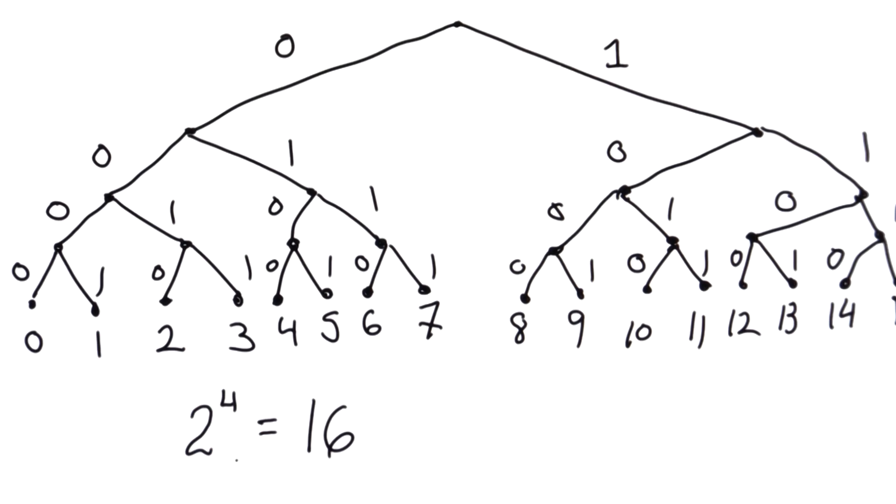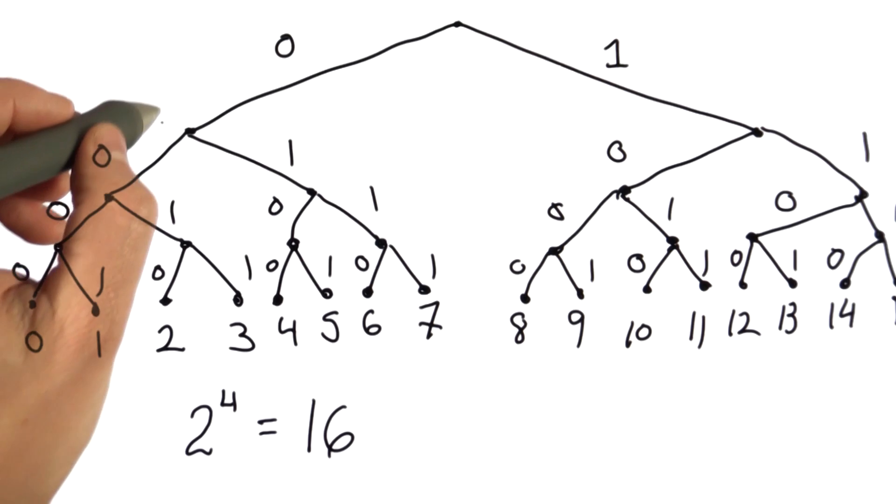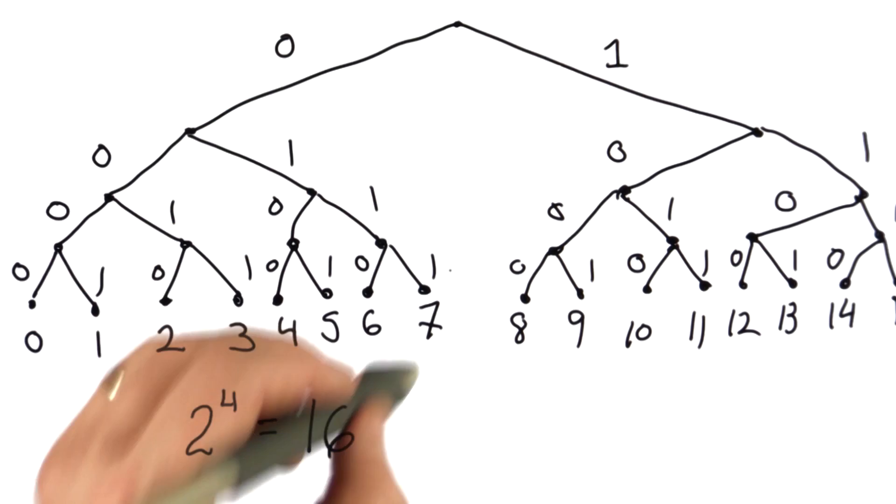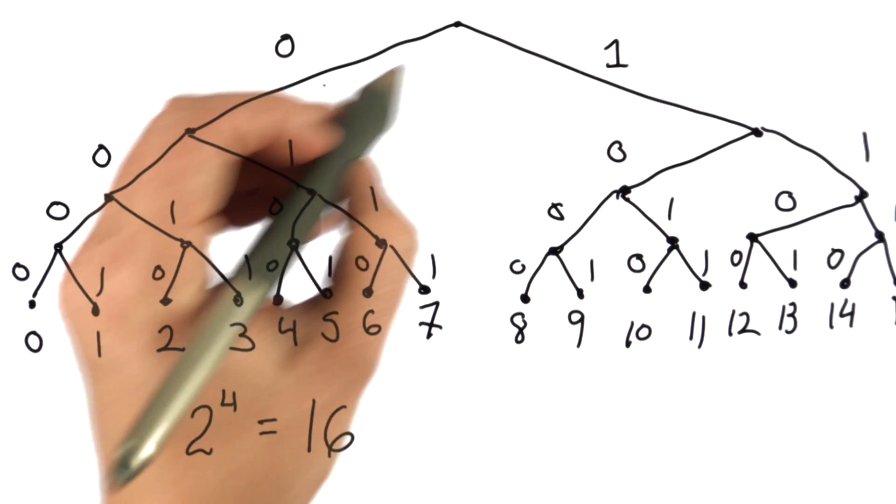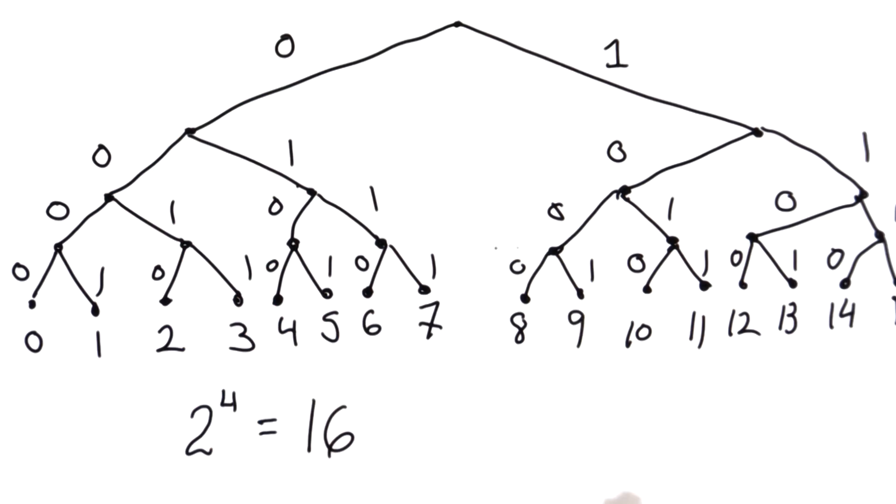Every time I add one more bit, I double the number of things because I have one more yes-no question. So for just this part of the graph, I had eight things. I had three bits. I could distinguish between the numbers 0 through 7. Adding one more bit doubles the number of things I can distinguish.